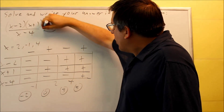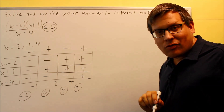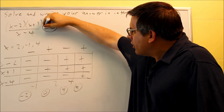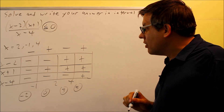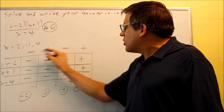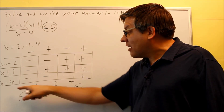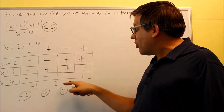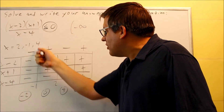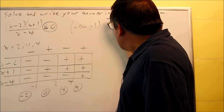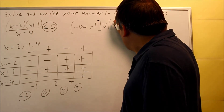We look at the original problem — we're looking for less than or equal to zero, meaning we want regions that are negative or equal to zero. We can include the endpoints because of the equal sign. The negative regions are the first and third columns. So the answer in interval notation is: from negative infinity to negative 1 with a bracket, union 2 to 4 with brackets.